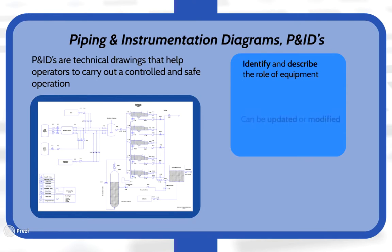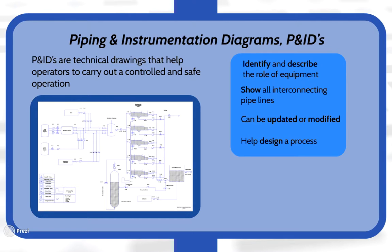They show all interconnecting pipelines and help design a process. Are you aware that P&IDs are not the same as process flow diagrams? One of the key differences is that P&IDs do not include temperature, pressure and flow data.